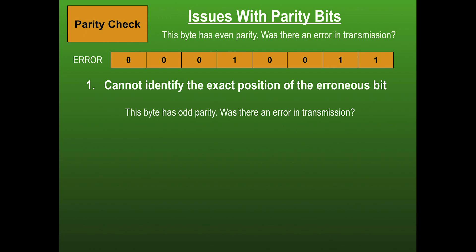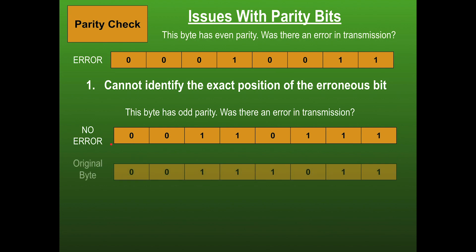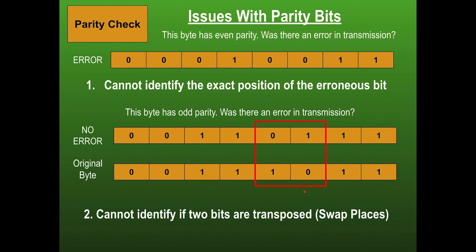Another issue: consider a byte with odd parity that arrives with five true bits — it looks correct. But comparing to the original, two bits have swapped places, arriving as zero-one when it should have been one-zero. This is called transposed. With parity bits alone, you cannot identify if two bits have swapped places, so an error would go undetected.